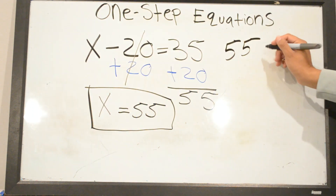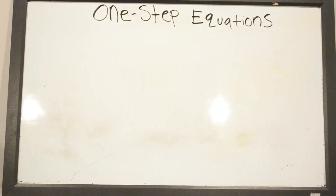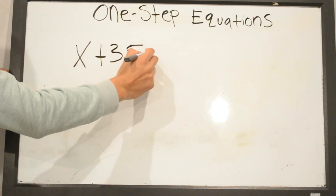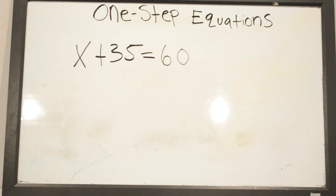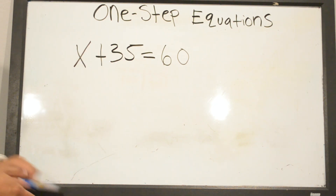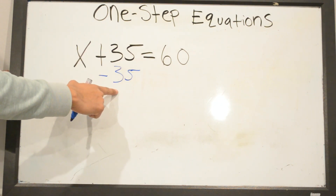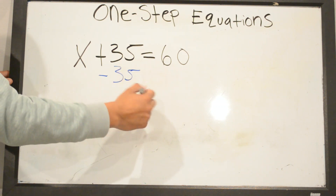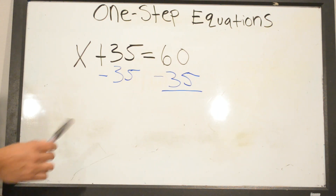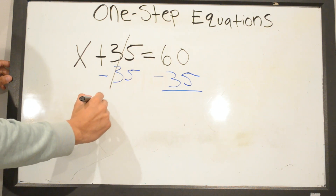Now we will be solving X plus 35 equals 60. How are we going to get rid of 35? We're going to do the opposite of positive 35, so the opposite is negative 35. Whatever we do on one side of the equal sign we always have to do it on the other side. Positive 35 and negative 35 cancel, leaving X by itself.